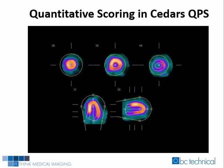The quantitative scoring was calculated using CEDARS QPS software in order to accurately score the processed SPECT images. Every patient was processed in the slices page to make sure the contours matched the myocardium. If the contours did not match, the manual option was used. We see the contours match perfectly in this example.